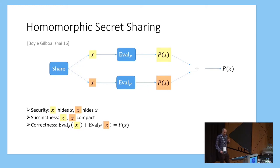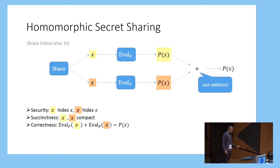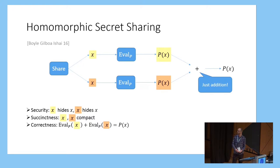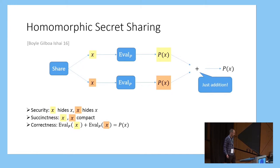I'm going to consider a very strong form of reconstruction on the secret sharing, where the outputs of the evaluation procedure can simply be added together to give the correct result applied to the inputs. This might seem very strong, but it's actually very useful and important, particularly for applications like secure computation, where we want to get very low communication overhead.